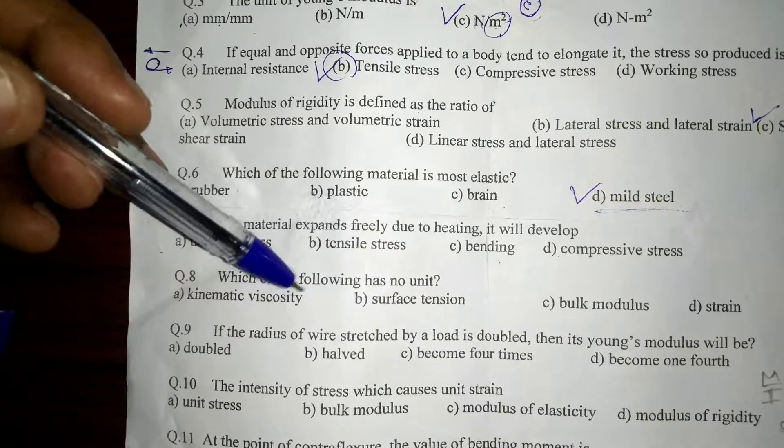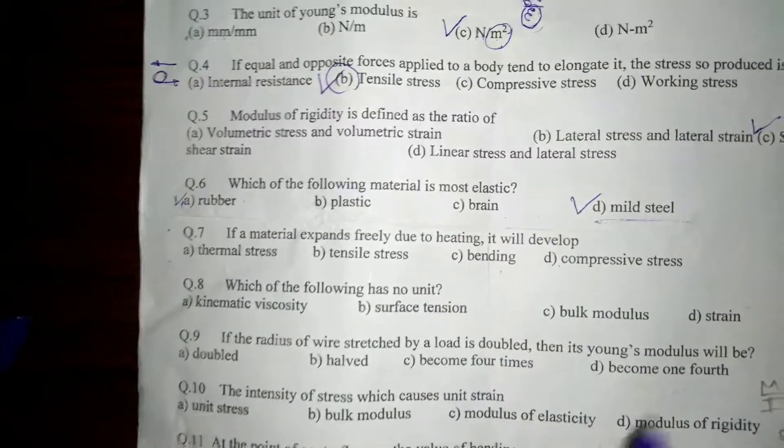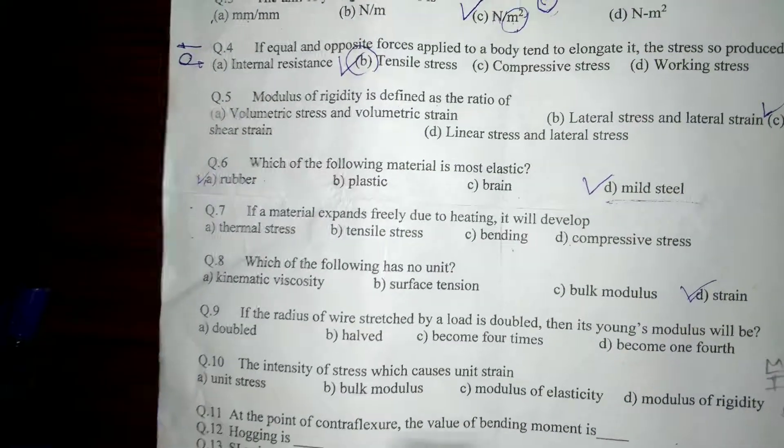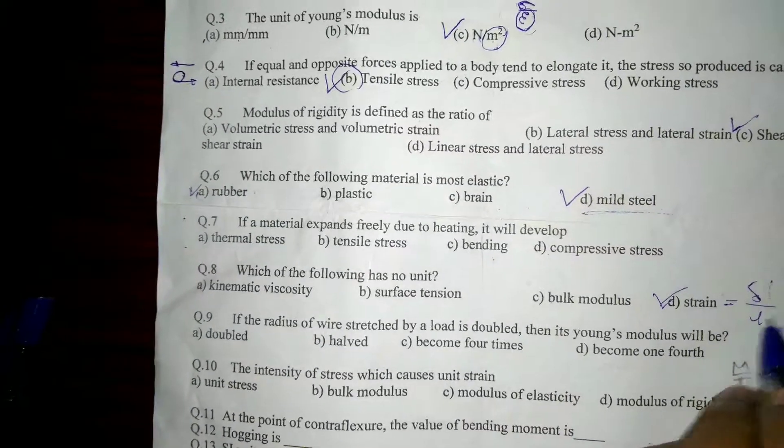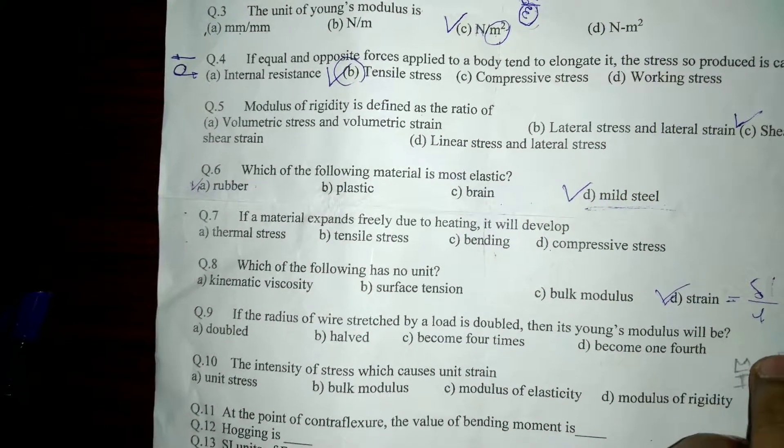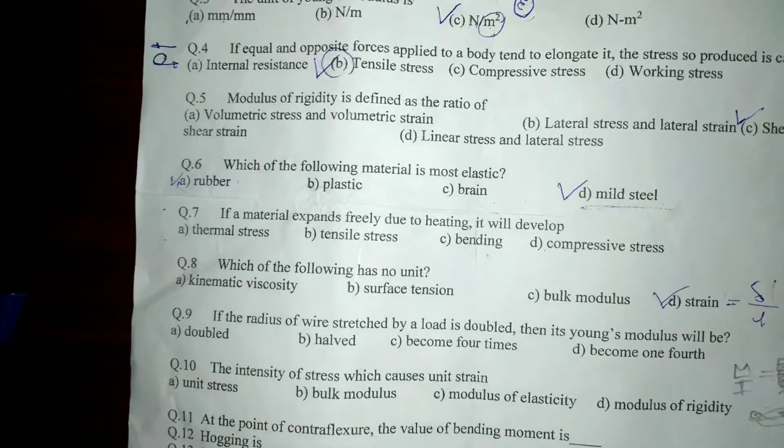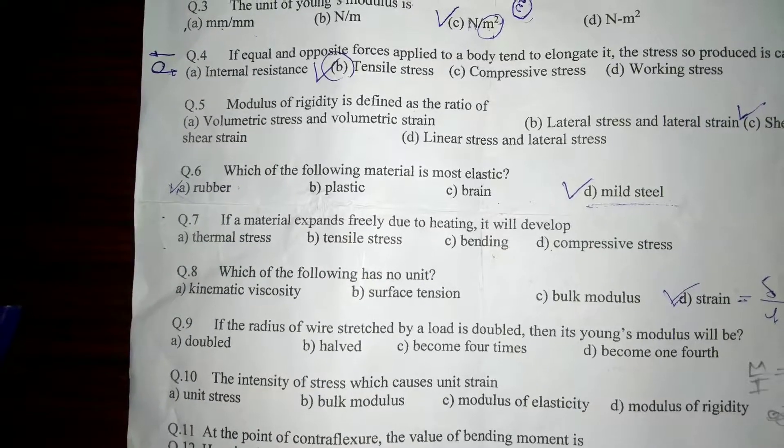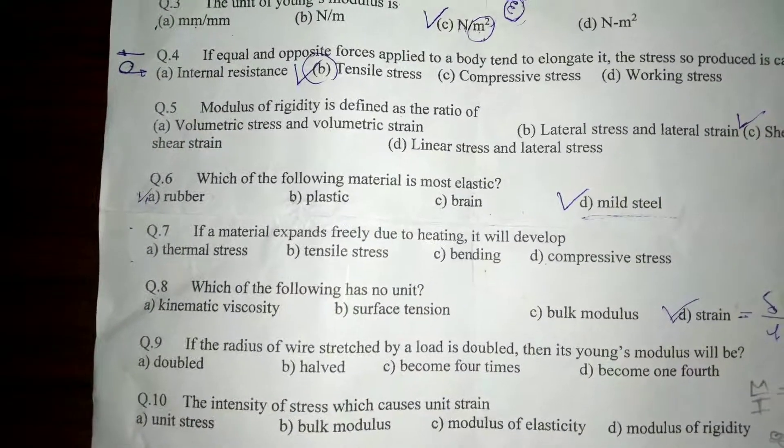Next question: which of the following has no unit, meaning it is unitless? As I said, strain is unitless. Strain is defined as change in length divided by original length. Both values are in meters, so they cancel out, making it unitless.